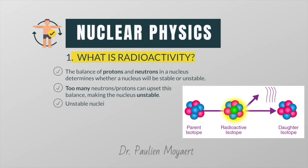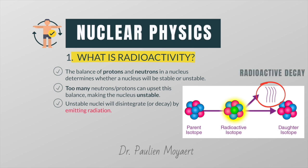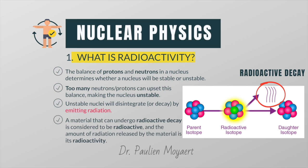Unstable nuclei — nuclei with too many protons or too few neutrons — will disintegrate or decay by emitting radiation. This is called radioactive decay. A material that can undergo radioactive decay is considered to be radioactive, and the amount of radiation released by the material is its radioactivity.